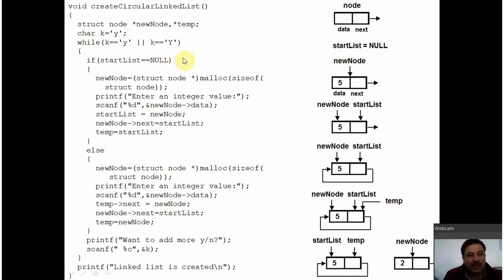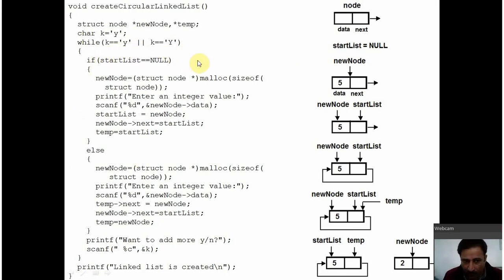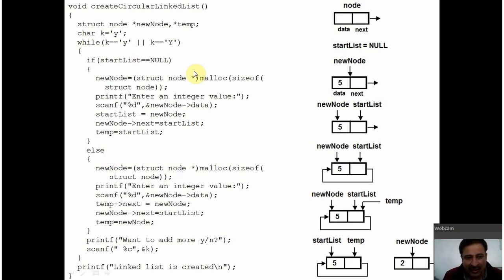That is, after adding every node, you will be prompting the user if the user wants to add more nodes or not. If the user presses Y, then the loop will be repeated to ask for another node. If the user wants to stop, the user will press no to exit from this while loop. Here, because the value of k is already y, it will go into this if block. You are checking whether the startList is null because the circular linked list is not yet created — the startList pointer is still null.